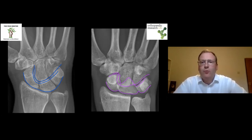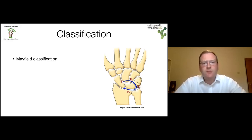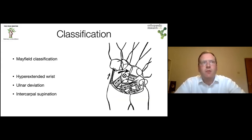How can we classify perilunate injuries? In 1980, Mayfield described his classification of perilunate injuries — originally it was purely a soft tissue classification. This was an anatomical paper where he loaded cadaveric wrists and found that a predictable pattern of injury occurred when a hyperextended wrist was taken into ulnar deviation. In the diagram, straight lines are ligaments under tension and jagged arrows are ligaments not under tension.